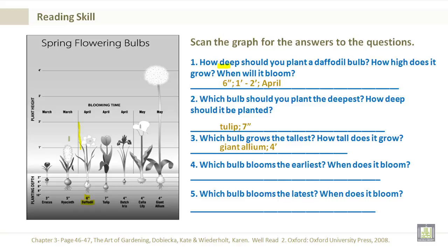Which bulb blooms the earliest? When does it bloom? That would be the crocus, in early March. Which bulb blooms the latest? When does it bloom? That would be the giant allium, in late May.